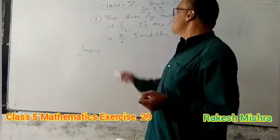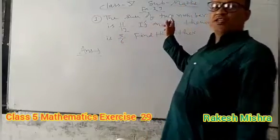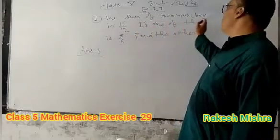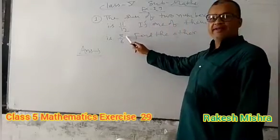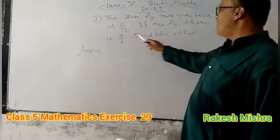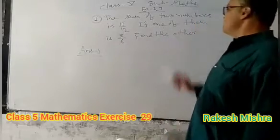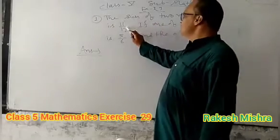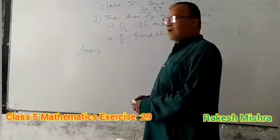At first a question is written. You see on the board the question is: the sum of two numbers is 11 by 12. If one of them is 5 by 6, find the other. We see here sum is given 11 by 12.